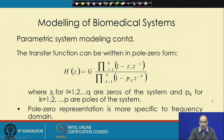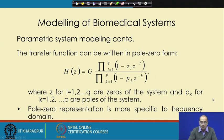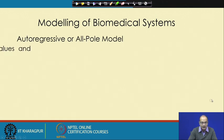The pole-zero representation is more specific to the frequency domain. Knowing the pole locations tells us where the PSD will have a peak, while zeros indicate where the PSD will take a dip. So we can get clearer information about the frequency domain using the pole-zero model — this does not have a direct counterpart in the time domain.